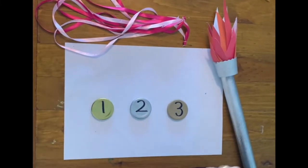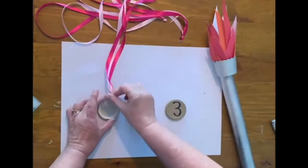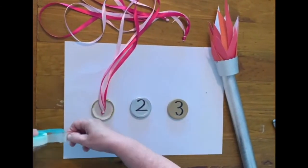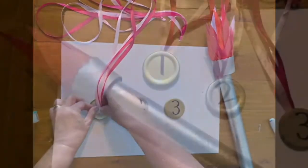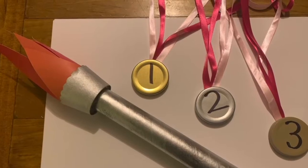So you can paint those lids. That's one, two and three. Grab your ribbons and just sticky tape it on the back for your medal. There we have our torch and our medals.